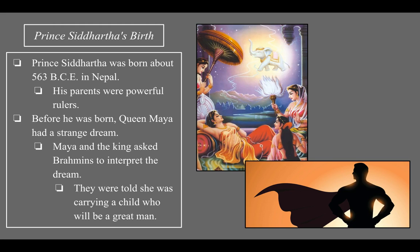We're going to start with the main figure of Buddhism — Prince Siddhartha — beginning with his birth. Prince Siddhartha was born about 563 BCE in Nepal, that's about 2,585 years ago. Nepal is just north of India and is the location of the Himalayas, so it's a mountainous region. 563 BCE means 563 years before the birth of Jesus, so this is a very old religion — not as old as Hinduism, but still very old.